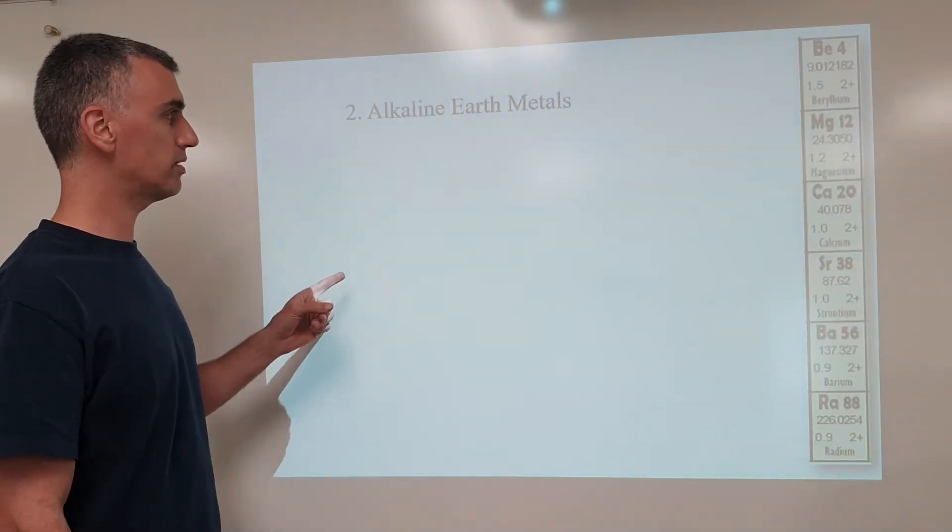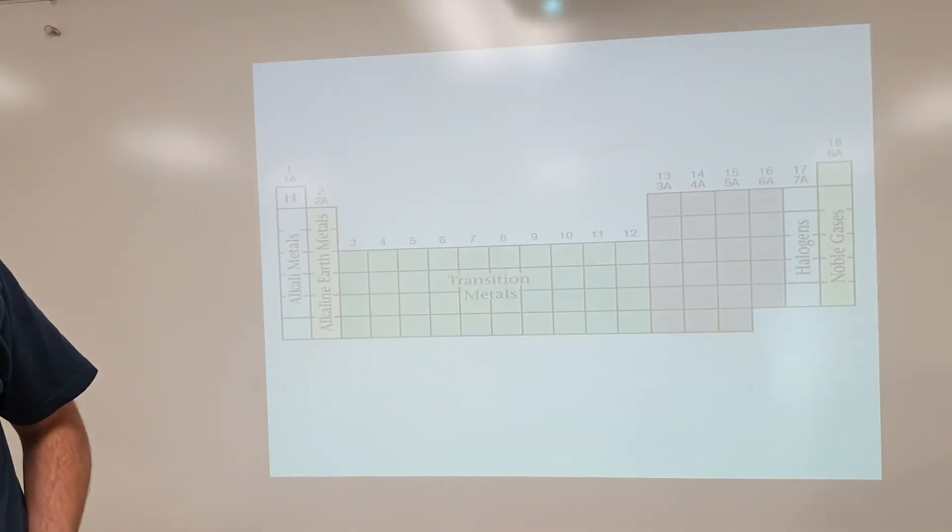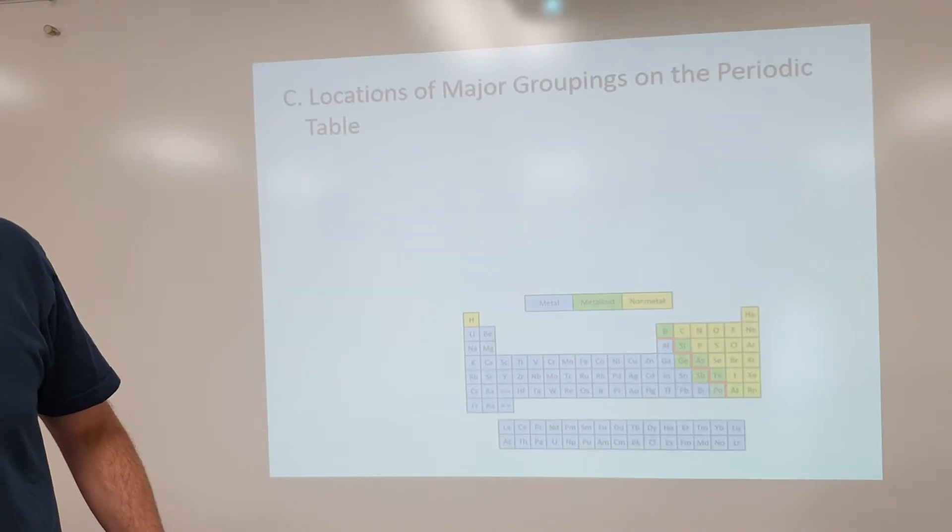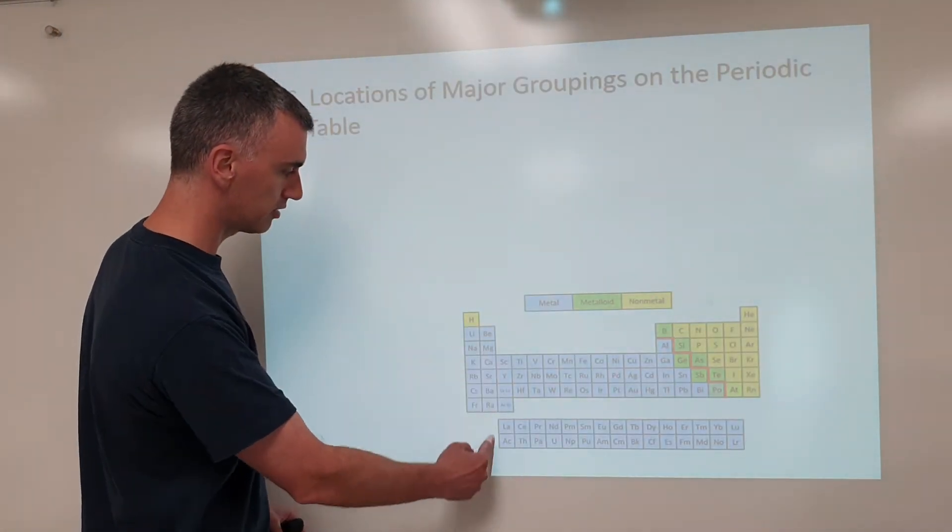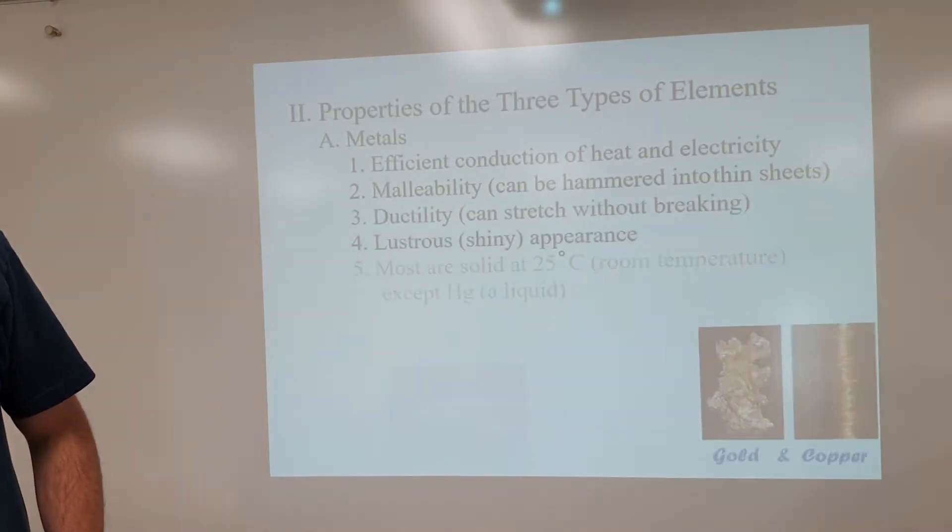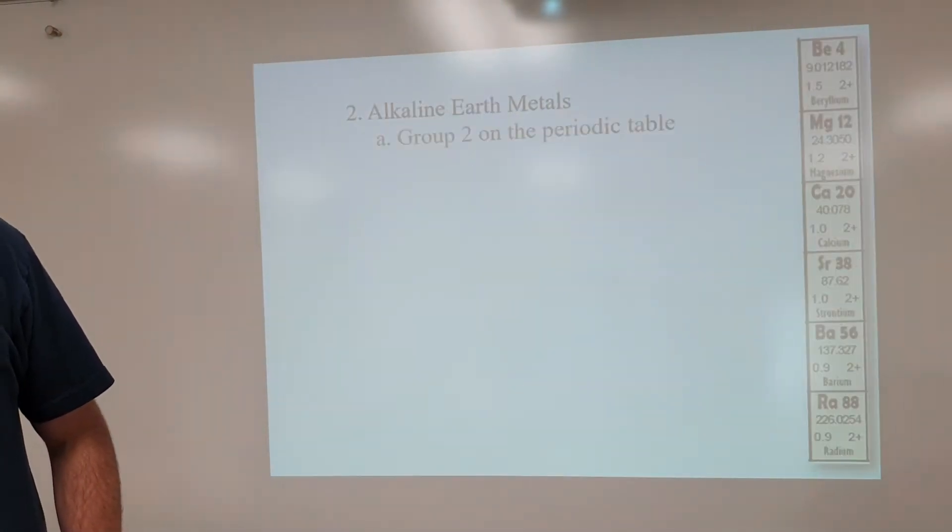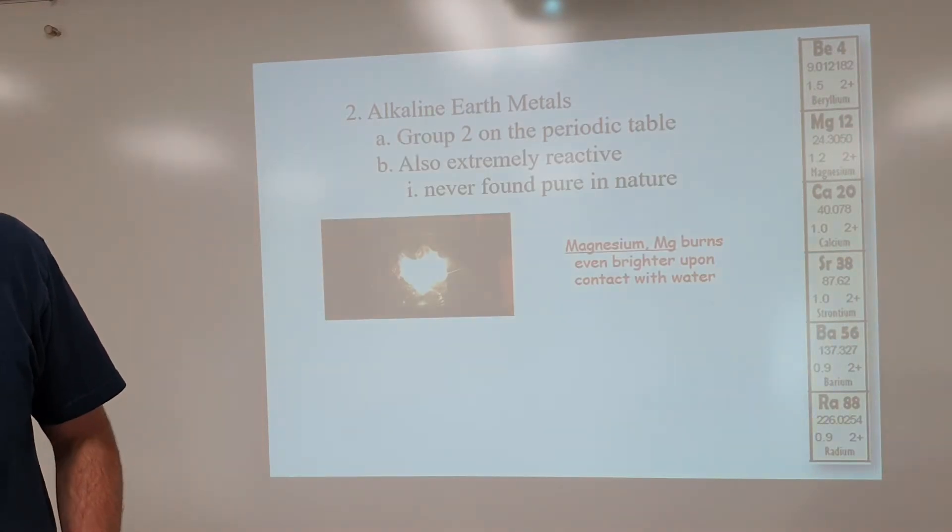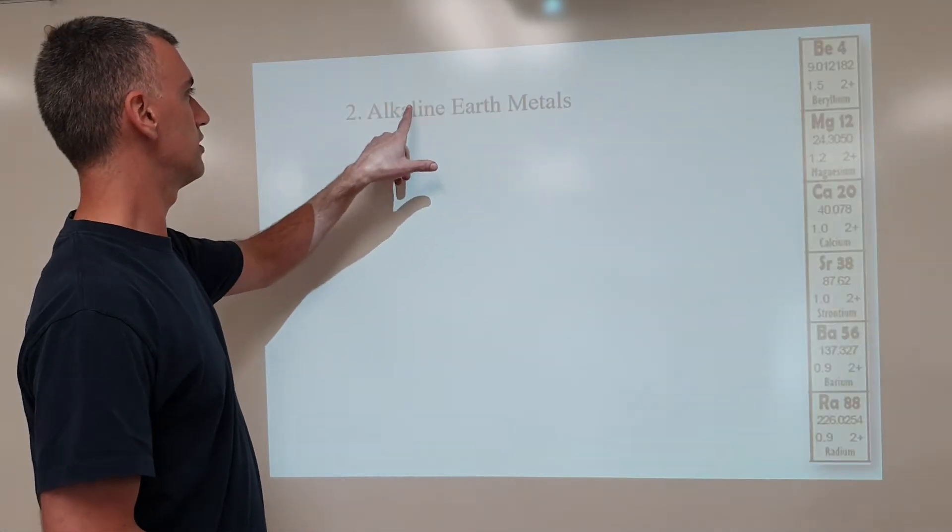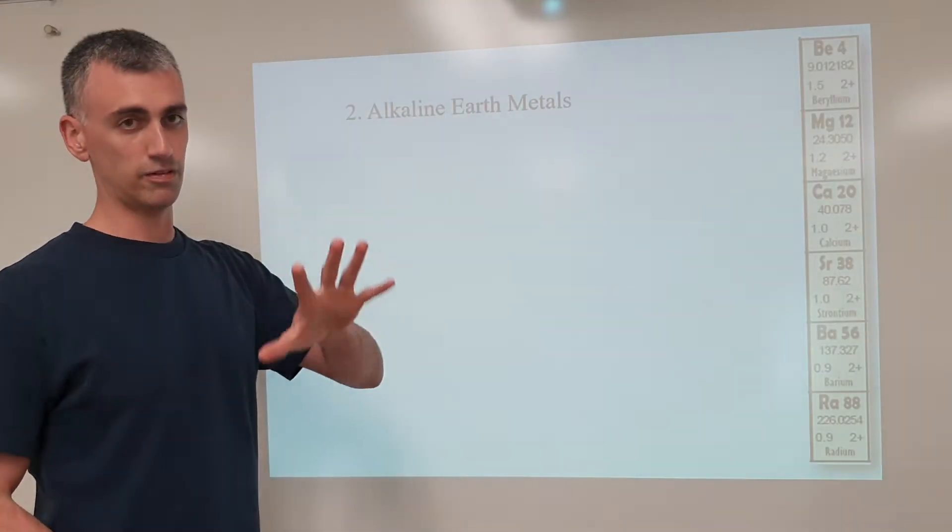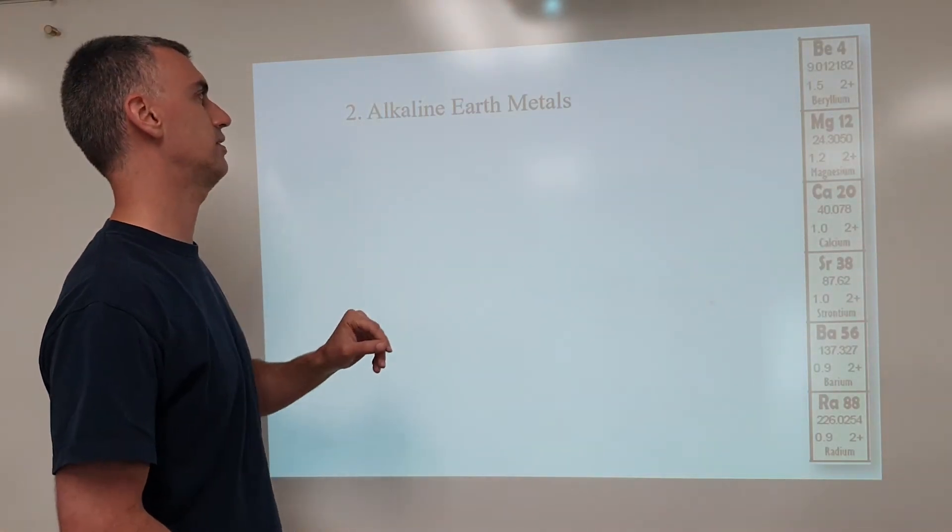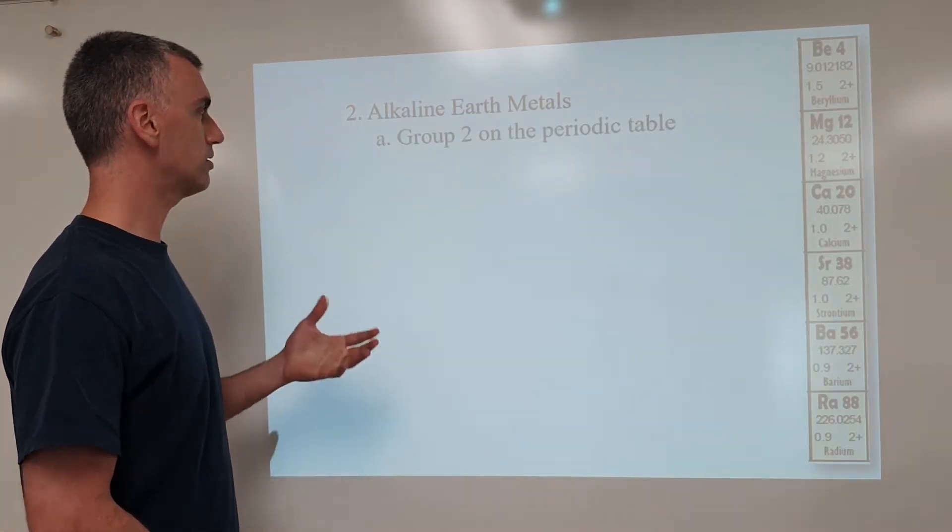Now alkaline earth metals are the second group from the left. Here they are, from beryllium all the way down to radium. And one of their big defining properties is being a lot less reactive than the alkali metals. So first of all, be careful. Alkali metals was group one. These are alkaline earth metals, so be careful about the similar names. And also be sure to call it the full name, alkaline earth, not just alkaline.